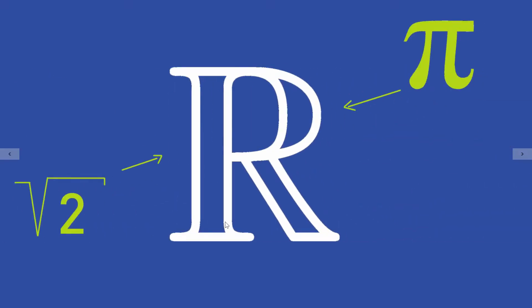You may already know that the real numbers are pretty important for mathematics. It is not enough to only consider fractions, or in other words rational numbers, because there are numbers like the square root of 2 and pi that cannot be represented as fractions. But both the square root of 2 and pi are elements of the real numbers.